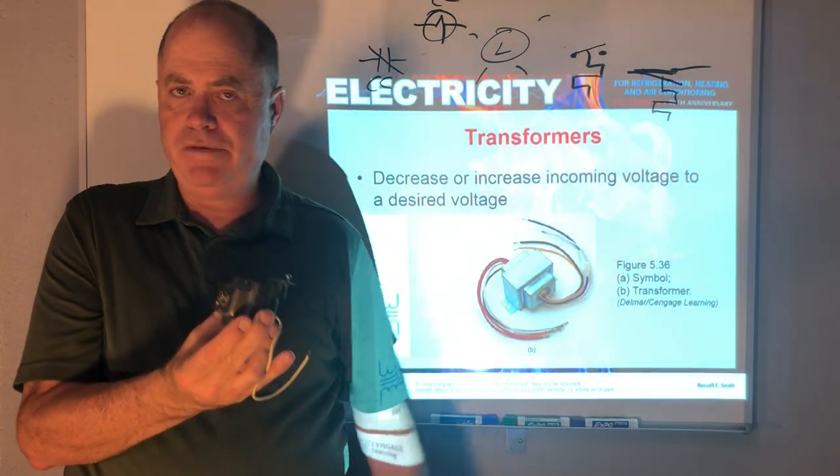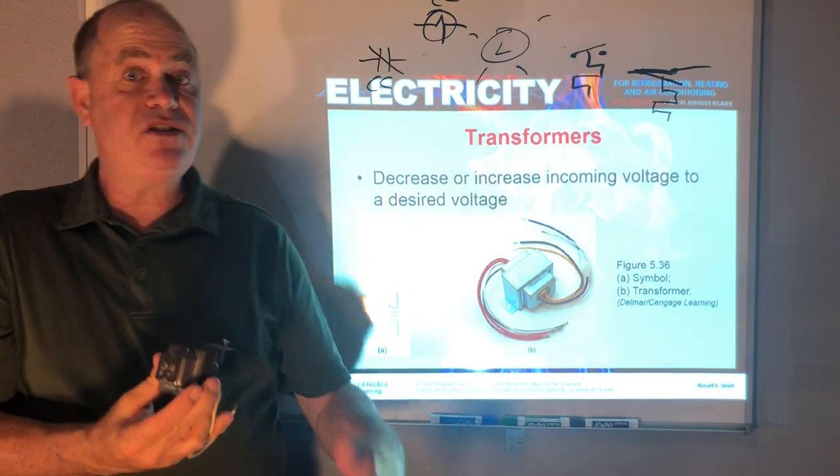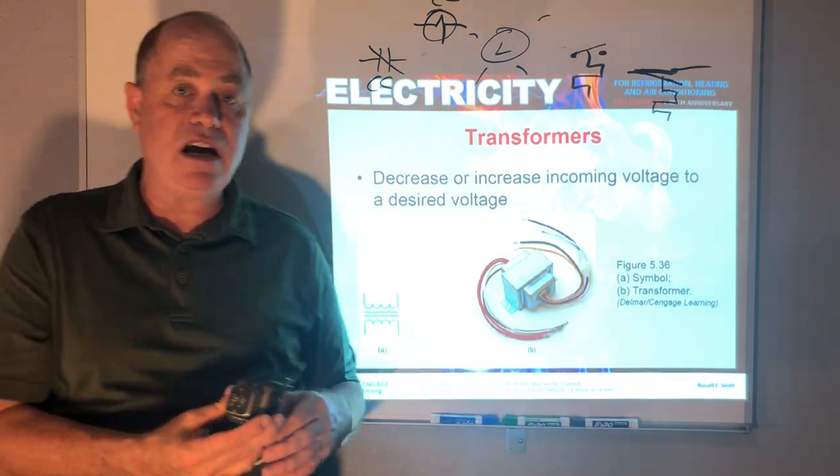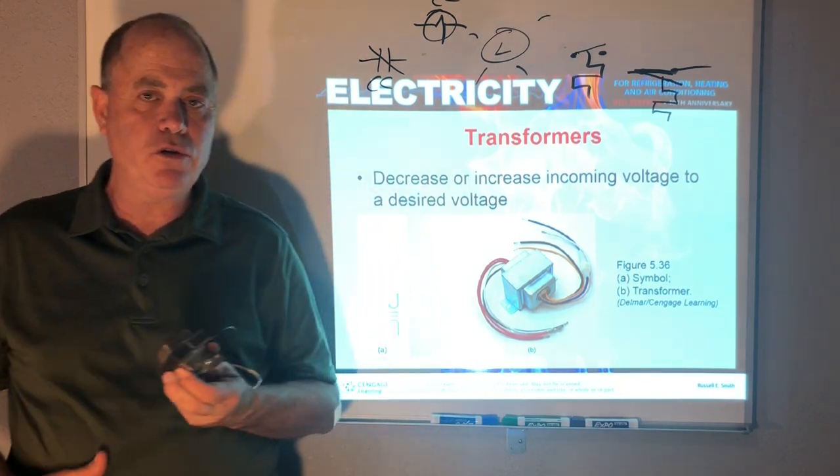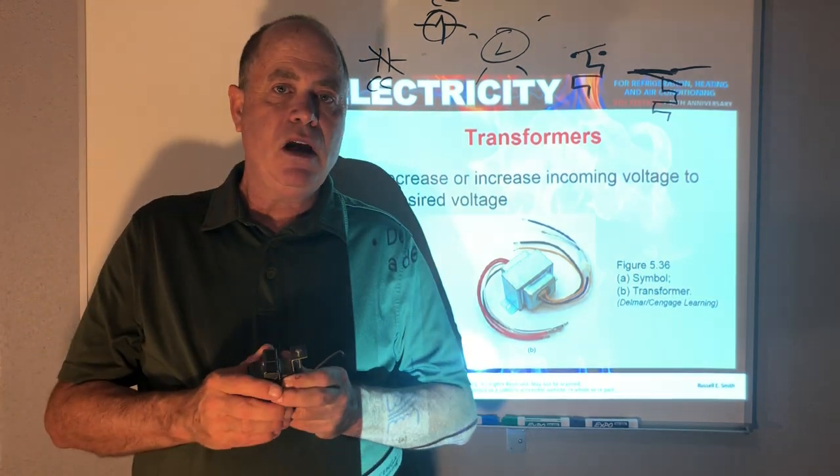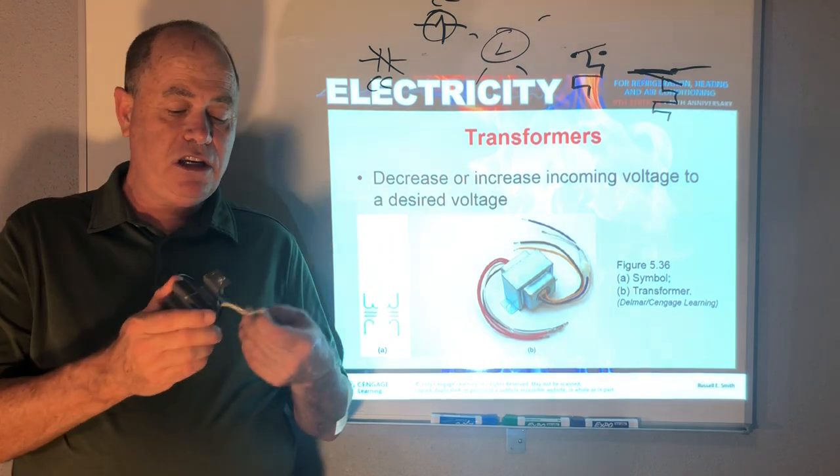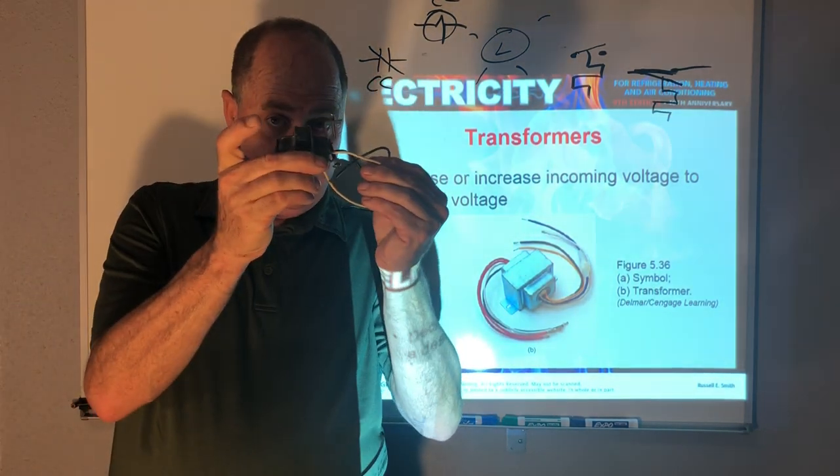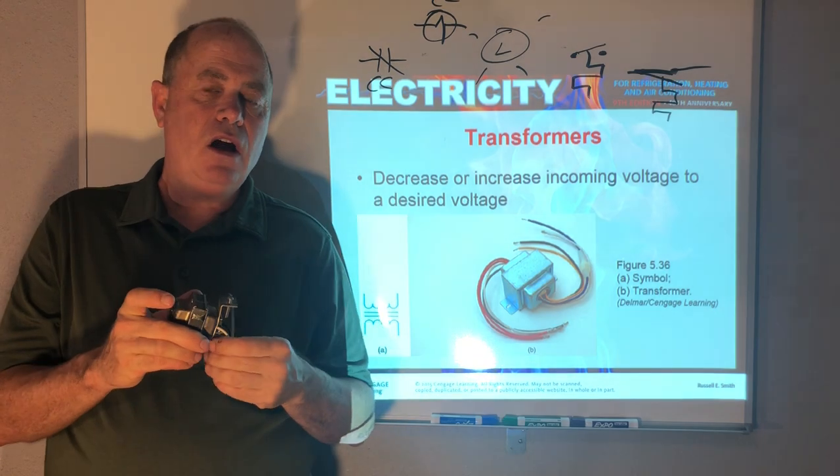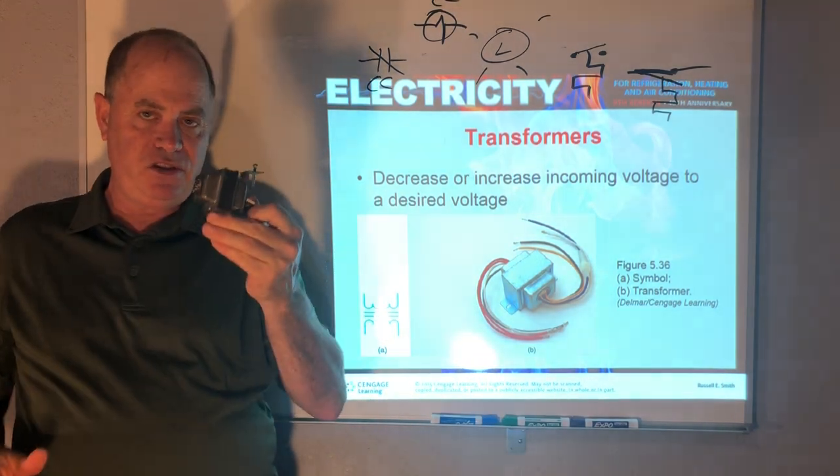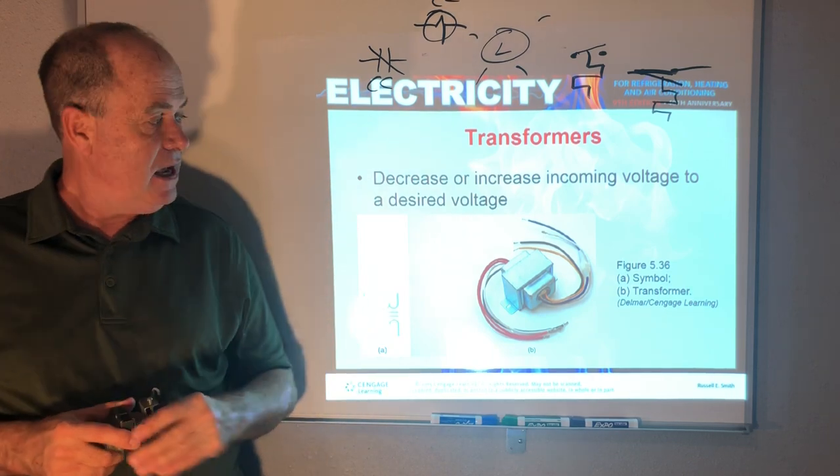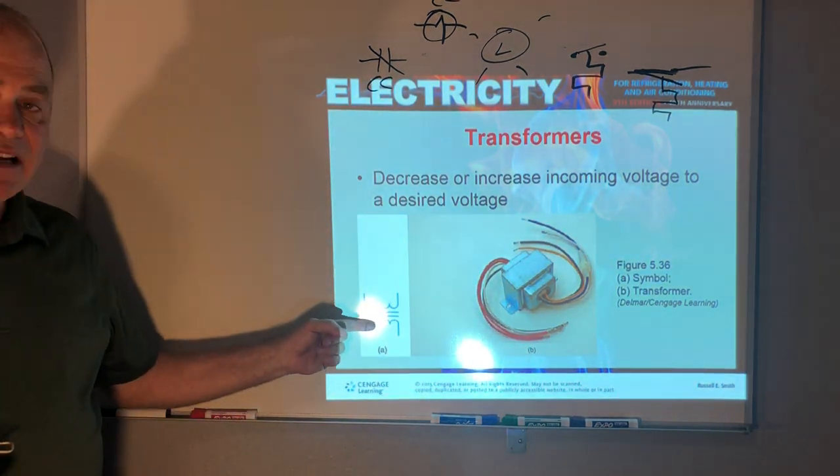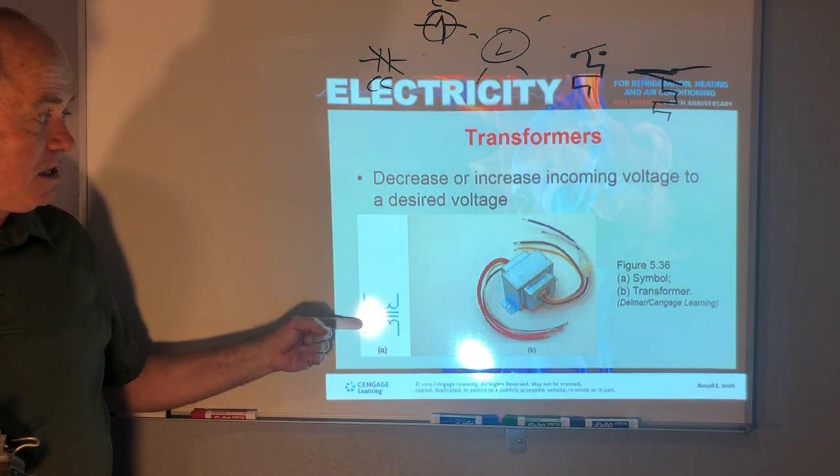And we always have transformers all around the city dropping the power down to voltage lower and lower, but in air conditioning, the control voltage that's most common is 24 volts. So we usually drop it down from, let's say 115 volts in this case, or 230 volts down to 24 volts. And you see a lot of these type of transformers in our industry.